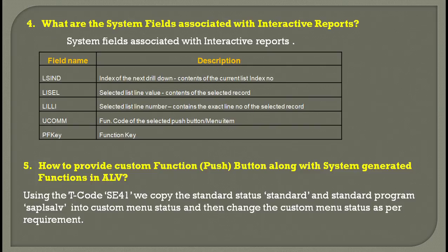The system fields associated with interactive reports are: SY-LSIND — index of next drill down, contains the current list index number; SY-LISEL — selected list line value, contains contents of the selected record; SY-LILLI — selected list line number; SY-UCOMM — function code of the selected push button; SY-PFKEY — the function key. For providing a custom push button in ALV, use T-code SE41, copy the standard status from program SAPL SALV into a custom menu status, then modify it as required.